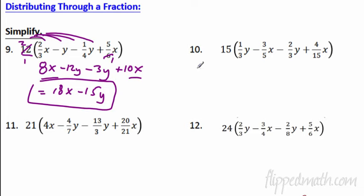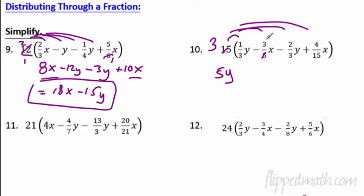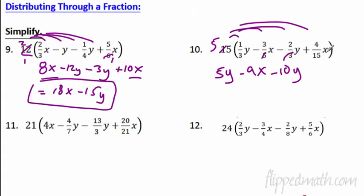Number 10: the LCM is 15. Multiply through each term. First: 15 and 3 cancel leaving 5, so 5 times 1Y is 5Y. Next: 15 and 5 cancel leaving 3, and 3 times negative 3 is negative 9X. Then: 15 and 3 cancel leaving 5, and 5 times negative 2Y is negative 10Y. Finally: the 15s cancel leaving 4X. Combine like terms to simplify.